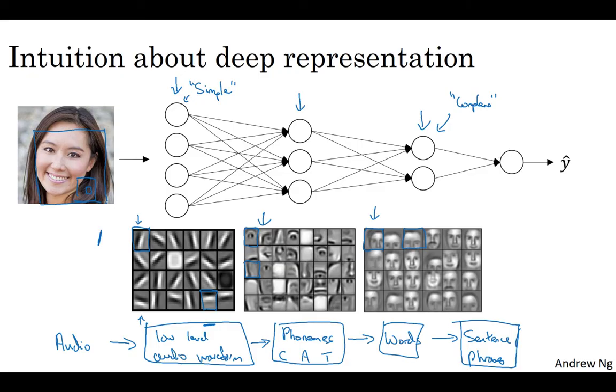Some people like to make an analogy between deep neural networks and the human brain, where we believe, or neuroscientists believe, that the human brain also starts off detecting simple things like edges in what your eyes see, and then builds those up to detect more complex things like the faces that you see. I think analogies between deep learning and the human brain are sometimes a little bit dangerous, but there is a lot of truth to this being how we think the human brain works, and that the human brain probably detects simple things like edges first, and then puts them together to form more and more complex objects. And so that has served as a loose form of inspiration for some deep learning as well. We'll say a bit more about the human brain or about the biological brain in a later video this week.